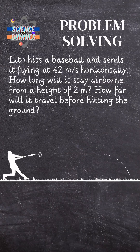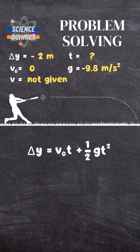Start solving this problem by drawing the motion of the ball to help you visualize what happened. After identifying the variables, let's do the vertical motion first since we're looking for hang time. Take note that the ball had no initial vertical velocity, only horizontal, and that v is not given, so we'll use equation 2.